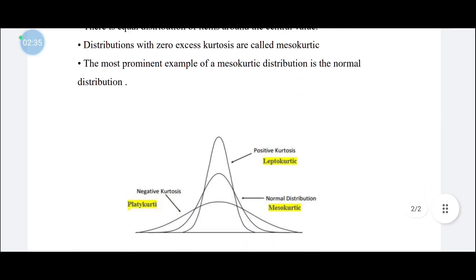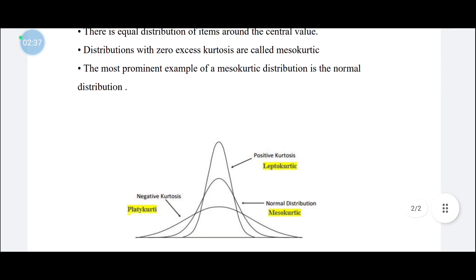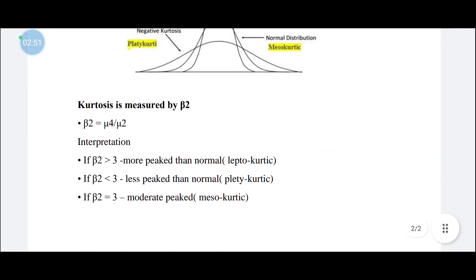So to recap: a high peak is leptokurtic, a normal peak is mesokurtic, and a flat or low peak distribution is platykurtic with negative excess kurtosis.